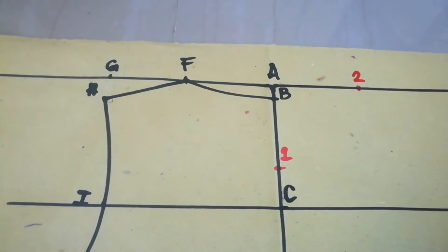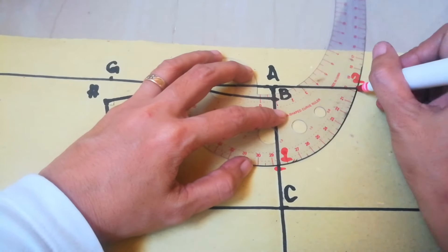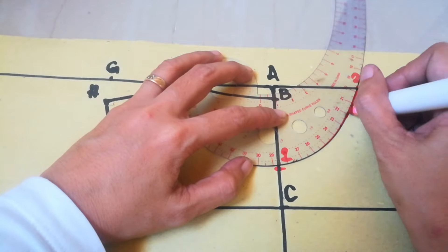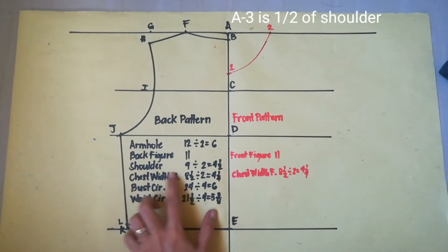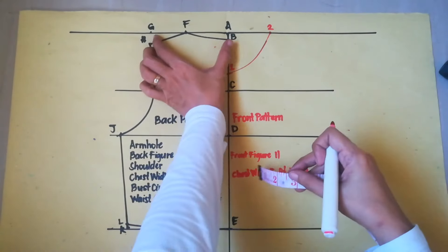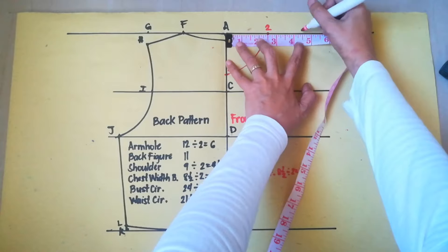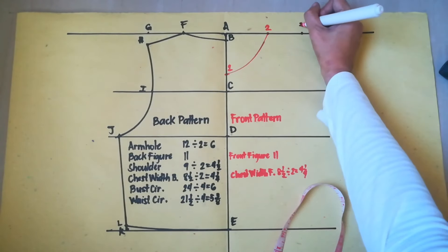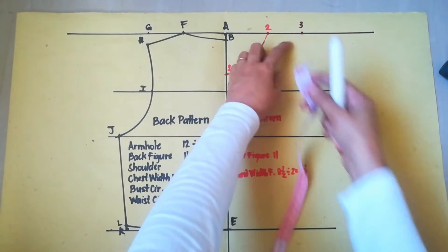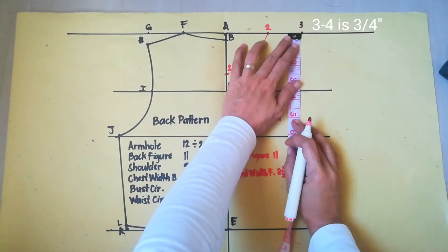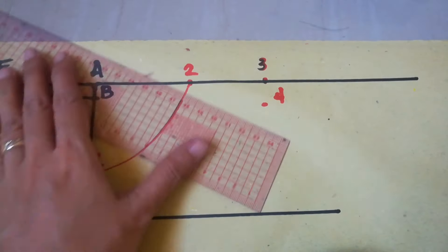Mark it point 2 and then connect 2 and 1 with French curve. Point 8 to 3 is 1 half of shoulder width. So, 4 and 1 half. So, it is the same measure with 8 to G. 4 and 1 half. This is point 3. Just the same with G to H, so 3 to 4 is also 3 fourth inch. Connect 2 and 4 with ruler.